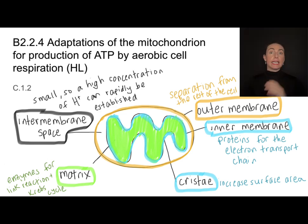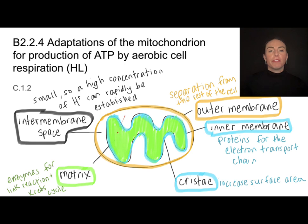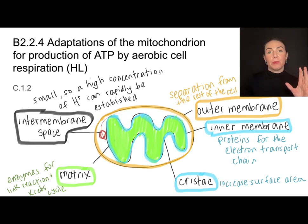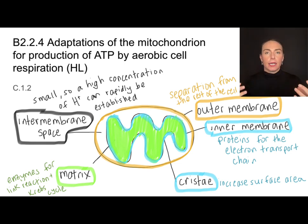Lastly, this intermembrane space — it's small, and so that's going to allow a high concentration of hydrogen ions or protons to rapidly be established. Protons are going to get pumped from the matrix into this intermembrane space, and we need a high concentration to develop really rapidly. If this intermembrane space were big, it would take a lot of time and a lot of protons to get a high concentration, but because it's small, that happens relatively quickly.